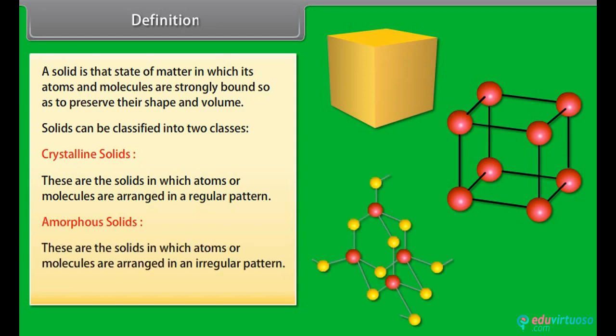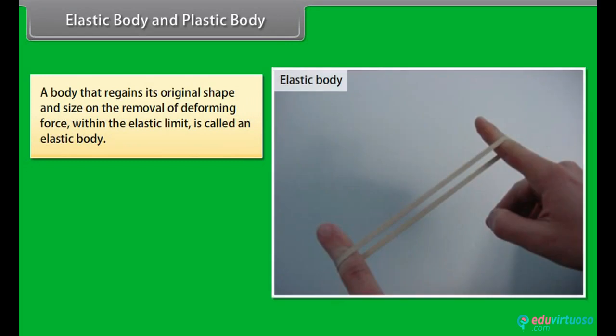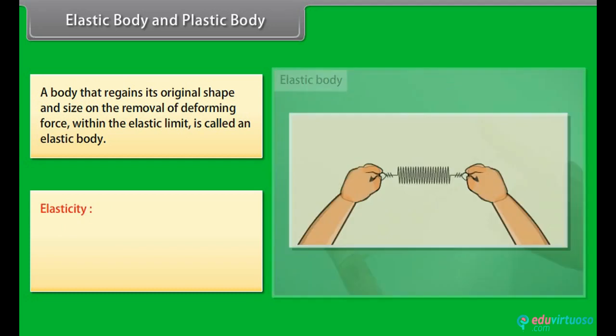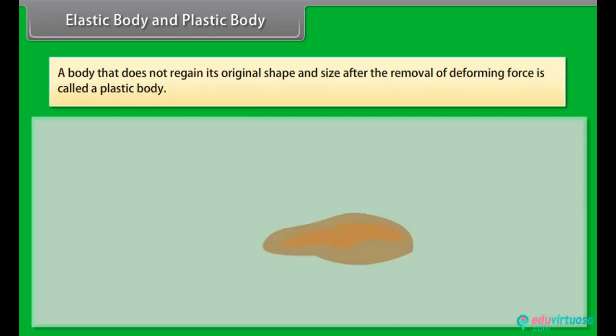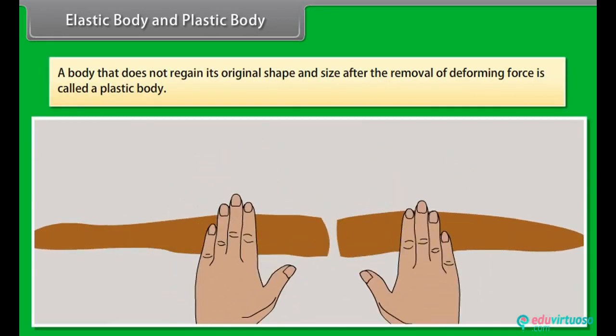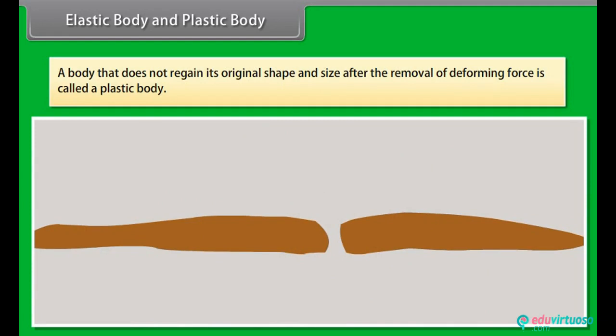Number 2: Amorphous solids — these are the solids in which atoms or molecules are arranged in an irregular pattern. These solids are also called glassy solids. A body that regains its original shape and size on the removal of deforming force within the elastic limit is called an elastic body. Elasticity is defined as the property of matter by virtue of which it regains its original shape and size after the removal of deforming force. A body that does not regain its original shape and size after the removal of deforming force is called a plastic body.